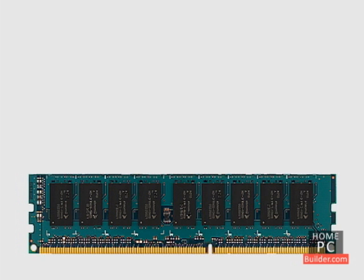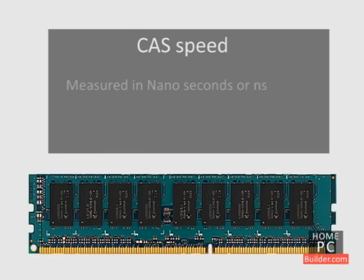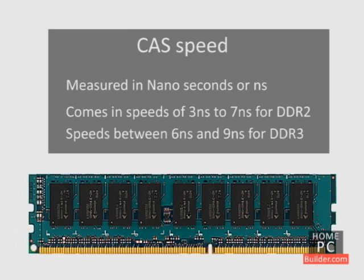Another measurement of RAM speed is called CAS. It's measured in nanoseconds, or NS, and comes in speeds of 3 to 7 nanoseconds for DDR2 RAM, and between 6 and 10 nanoseconds for DDR3 RAM. A lower CAS is better, but unless you're building a high-end system, it's probably not worth paying extra for the lower CAS.